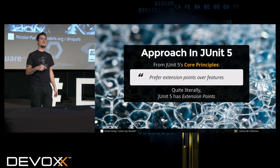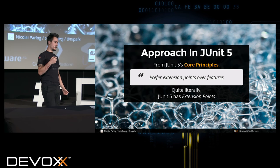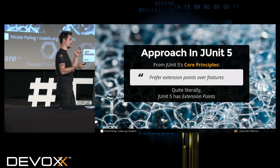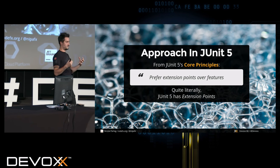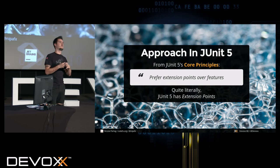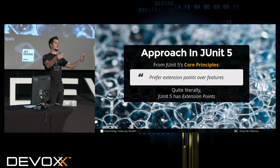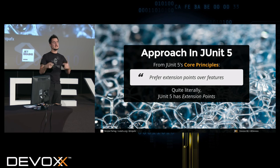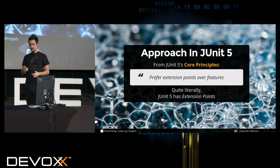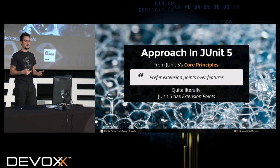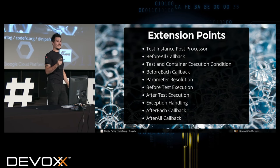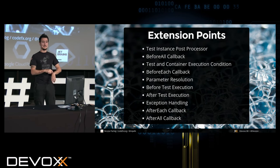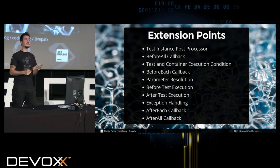In JUnit 5, a different approach was taken: extension points over features. The idea was not to implement all features as core features, but to design the extension points well enough that features can be implemented via them. JUnit 5 has a concept called extension points — and there will be a test afterwards, so you have a few seconds to memorize them.